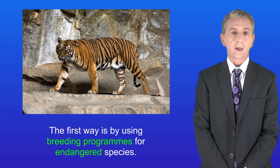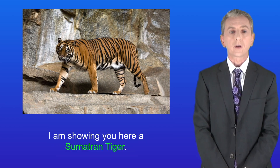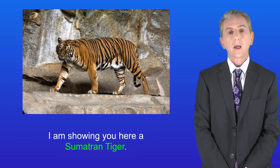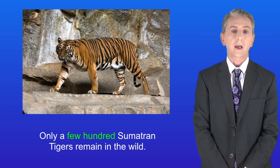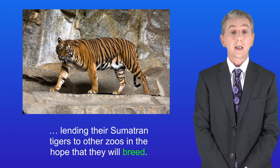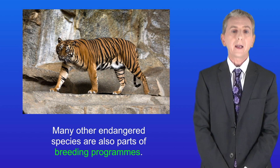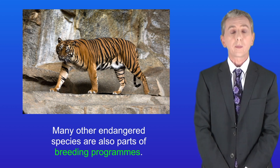The first way is by using breeding programs for endangered species. I'm showing you here a Sumatran tiger. Only a few hundred Sumatran tigers remain in the wild, so to increase the numbers, many zoos take part in a breeding program, lending their Sumatran tigers to other zoos in the hope that they'll breed. Many other endangered species are also part of breeding programs.